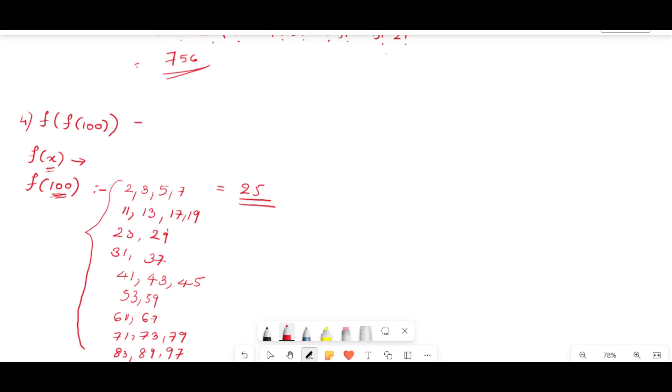Now what we have to find f(f(100)), that means f(25). That is the number of prime numbers less than 25. 2, 3, 5, 7, 11, 13, 17, 19, 23. These are the prime numbers less than 25. So there are 9 such numbers. So 9 is the correct answer.